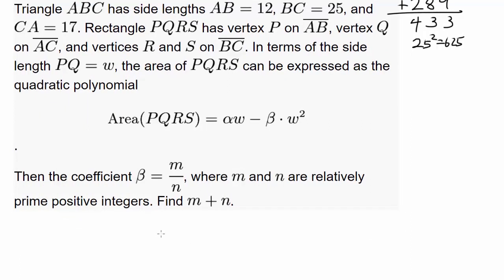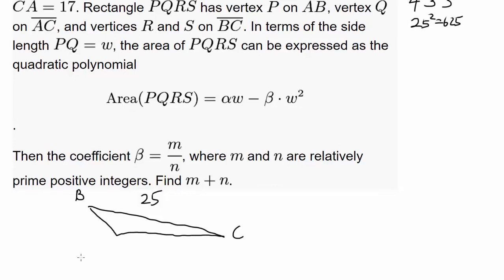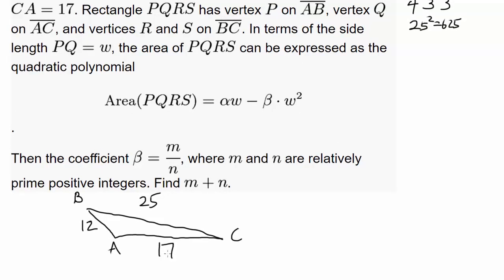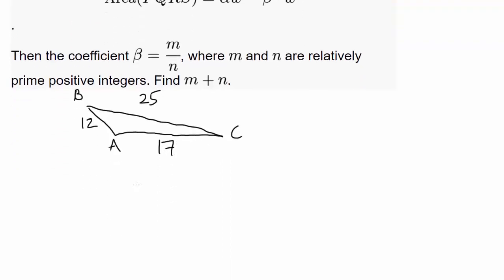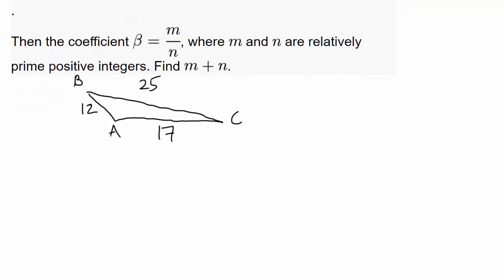So we have triangle ABC and BC is the longest side. So we have something like this, BC is the longest side which is 25, AB is 12, AC is 17. And we have rectangle PQRS. Let me actually draw a larger diagram, this thing is too small.